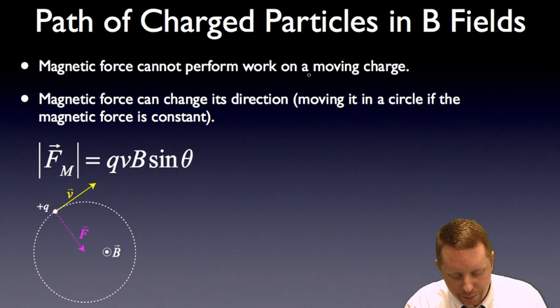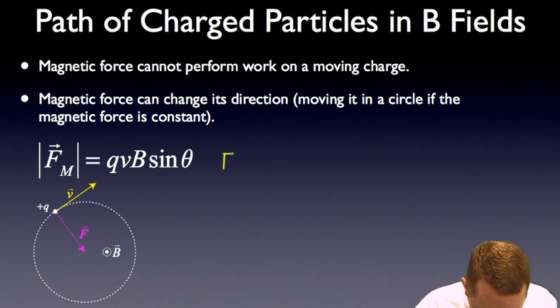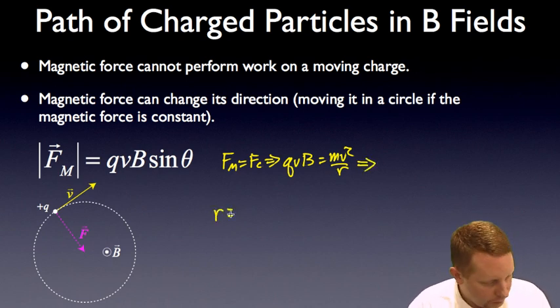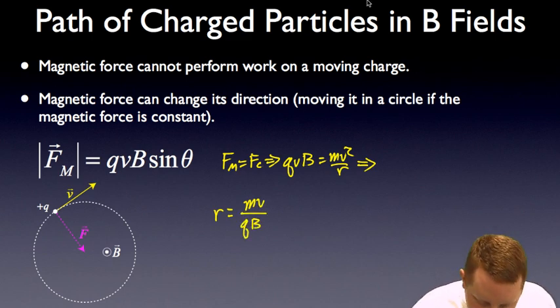So, if the magnetic force cannot perform work on a moving charge, it can change its direction, moving it in a circle if the magnetic force is constant. So, just expanding our diagram from the previous page, you can have an object moving in this circular path. In this case, the magnetic force is also what's causing the centripetal force, causing it to move in a circle. So, we could say that qvb, because sin theta is sin 90 or 1, equals mv squared over r. Therefore, the radius is going to be mv over qb. And note here that mv is just the momentum of your particle.